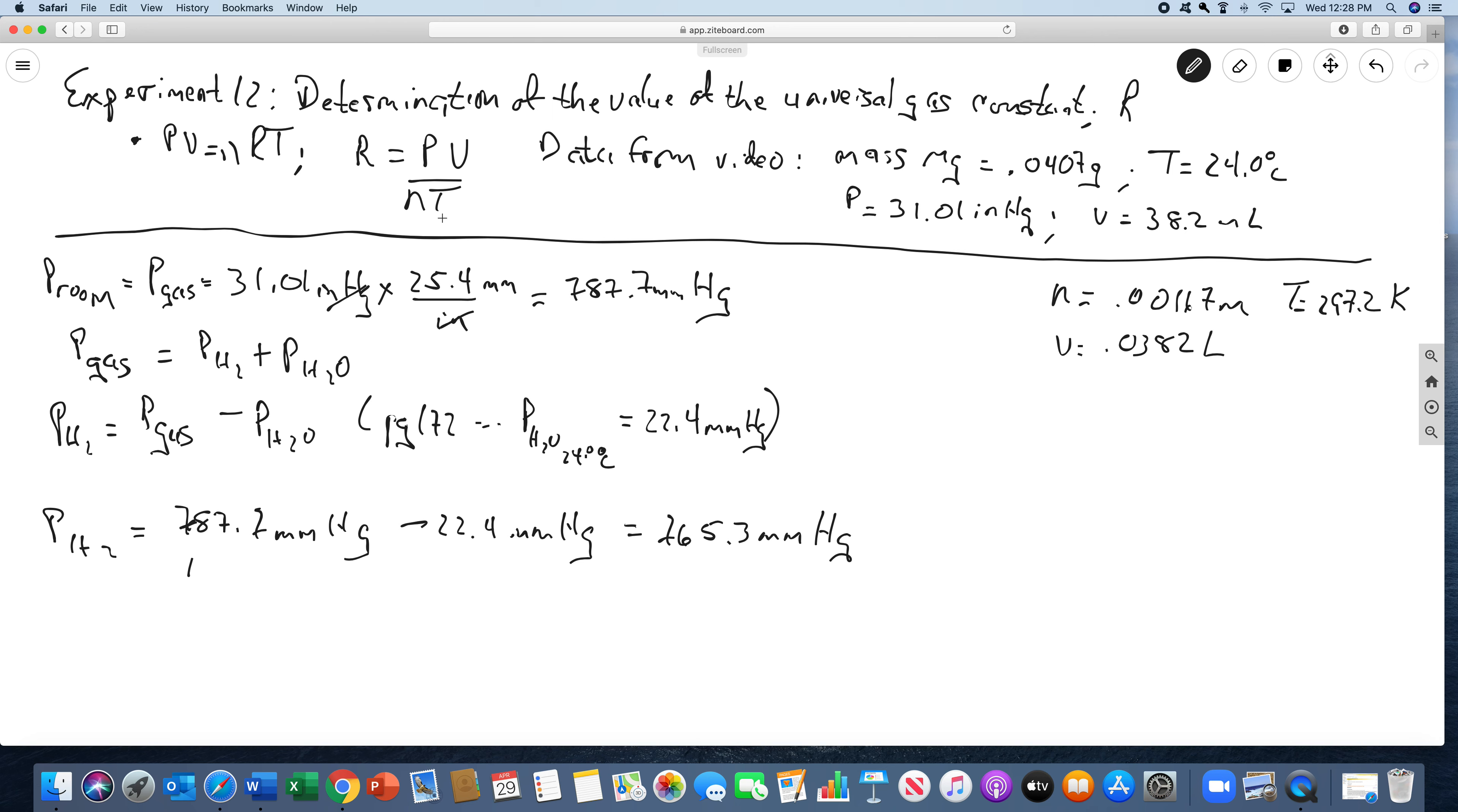Now, because the value of R is supposed to be in liters and atmospheres, we need it. So the pressure of the hydrogen in atmospheres, we do the conversion. There's 765.3 millimeters of mercury, and we know that there's 1 atmosphere for 760 millimeters of mercury. So the pressure of the hydrogen in atmospheres is 1.007 atmospheres.